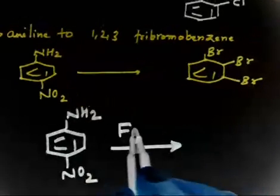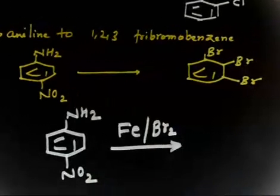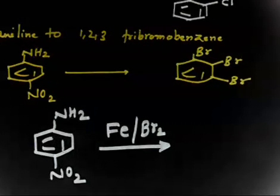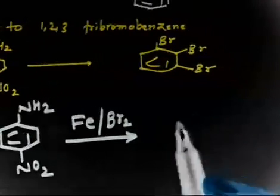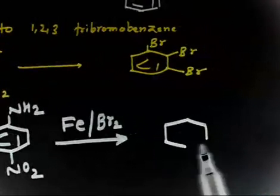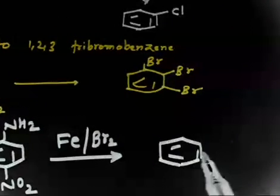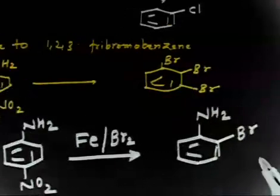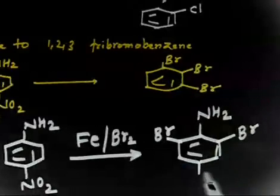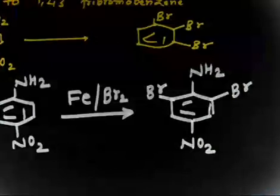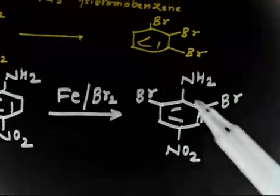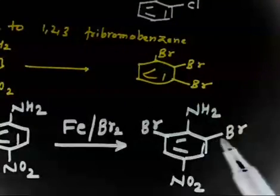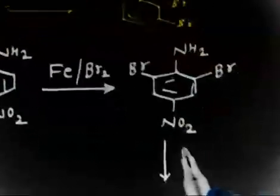If you add FeBr2 (FeBr3 catalyst), bromine attaches at the ortho carbons since the para position is blocked. You add two bromine groups at the ortho positions: one bromine here and another bromine here, with NO2 still present. To get one more bromine — giving 1,2,3-tribromobenzene — you first make the diazonium ion by treating with NaNO2/HCl.